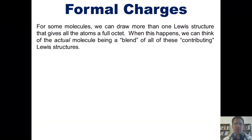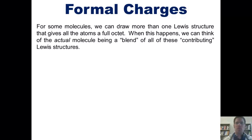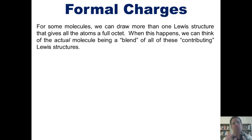We're now going to finish this chapter by teaching you about formal charges. For some molecules, we can draw more than one Lewis structure that gives all of the atoms a full octet. When this happens, we can think of the actual molecule as being a blend of all of these contributing Lewis structures.